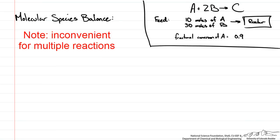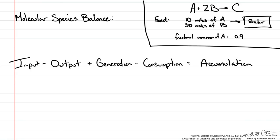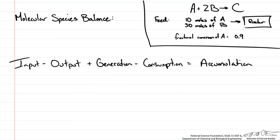The molecular species balance may be the least used method because it is kind of cumbersome to use on multiple reactions. We start with the general material balance: input minus output plus generation minus consumption equals accumulation. For a steady state process we get rid of the accumulation term.